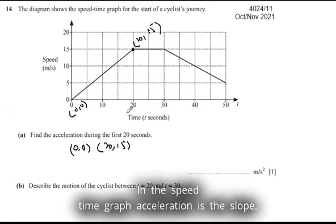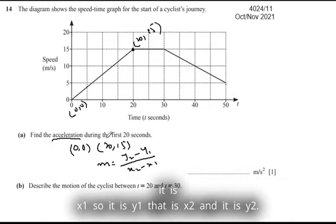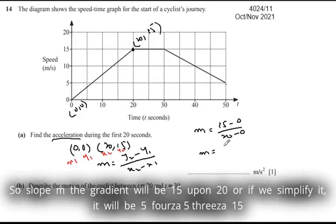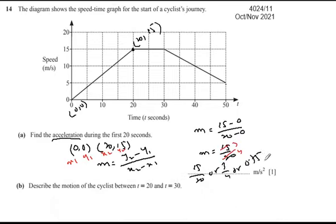In the speed-time graph, acceleration is the slope. So we find slope m, which is the gradient, and the formula is y2 minus y1 upon x2 minus x1. So slope will be 15 minus 0 upon 20 minus 0. The gradient will be 15 upon 20, or if we simplify it's 3 upon 4, or 0.75.